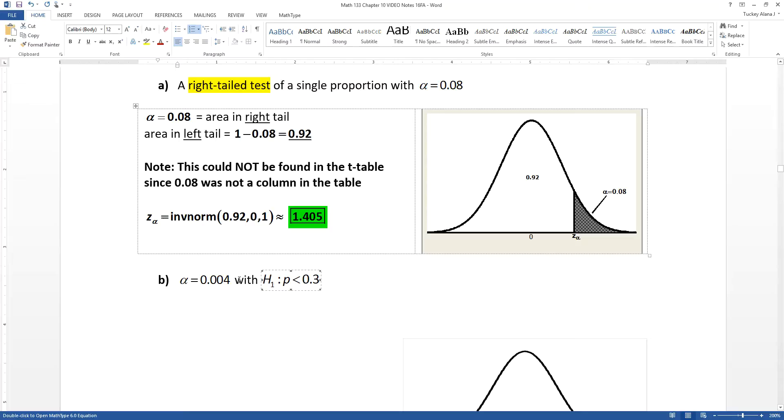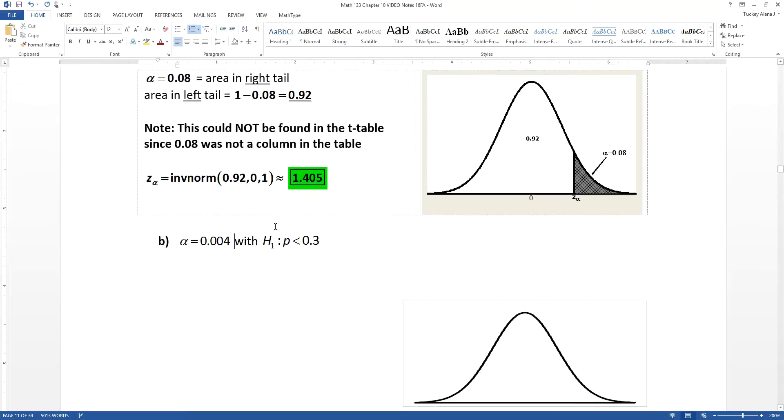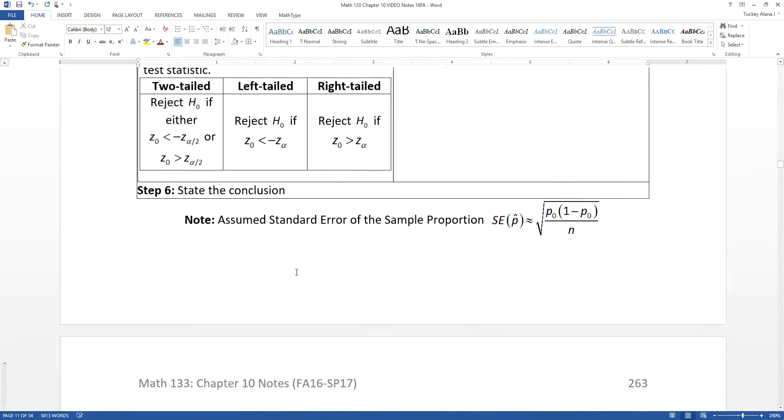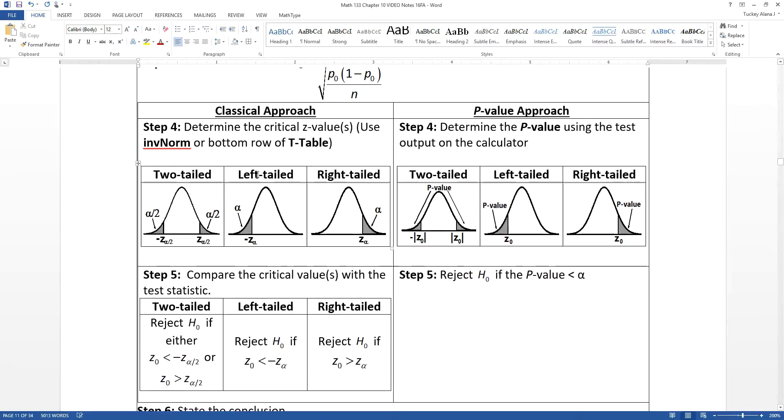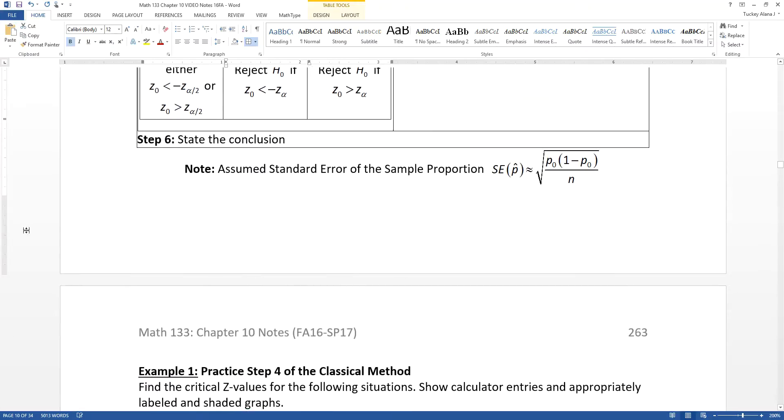Now let's look at the next one. It says that alpha is 0.004 with H1, that's your alternative hypothesis, being that P is less than 0.3. P means proportions, so we're looking at a Z score again. Less than means it's a left tailed test. So I want to look at the left tailed test picture. I'm going to label my left tail with that 0.004, which is not very much at all, and then I want to label that negative Z alpha down below.